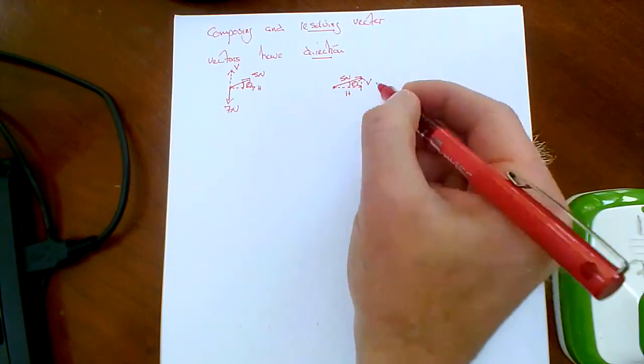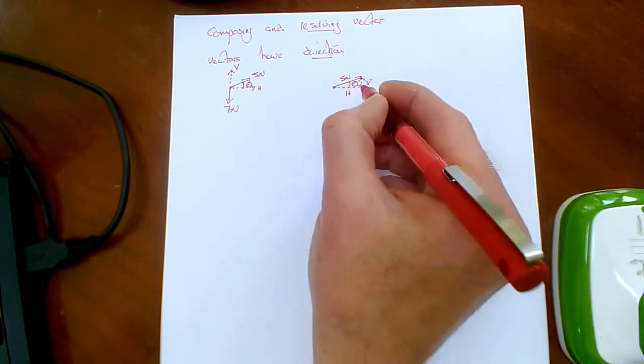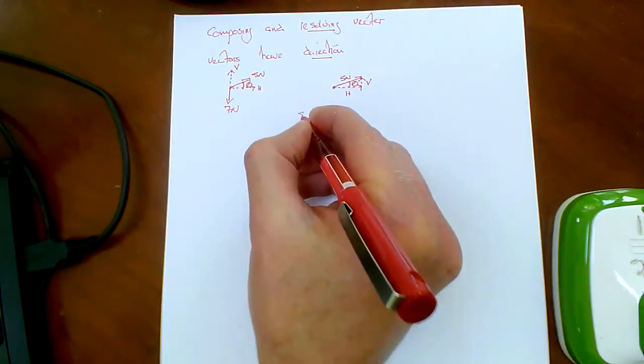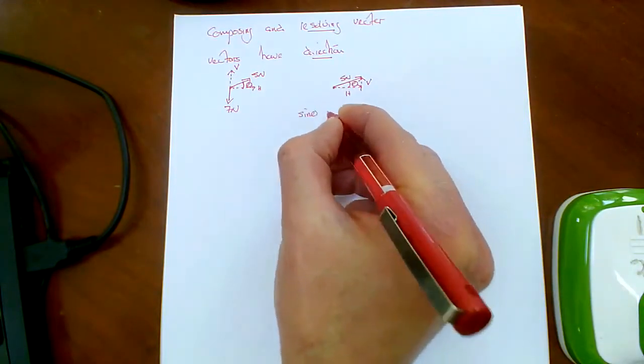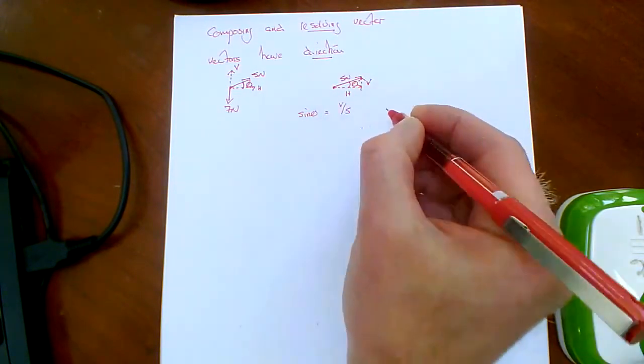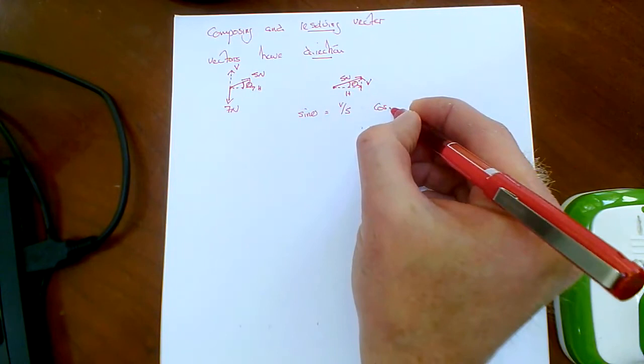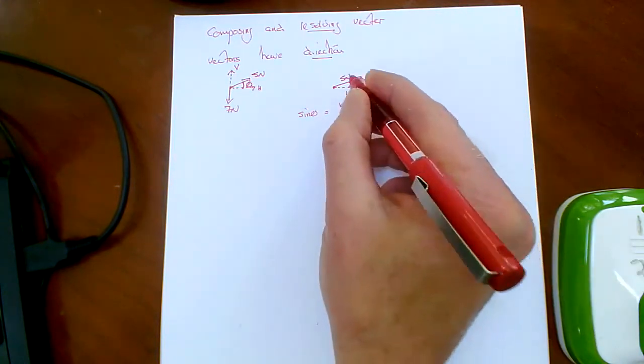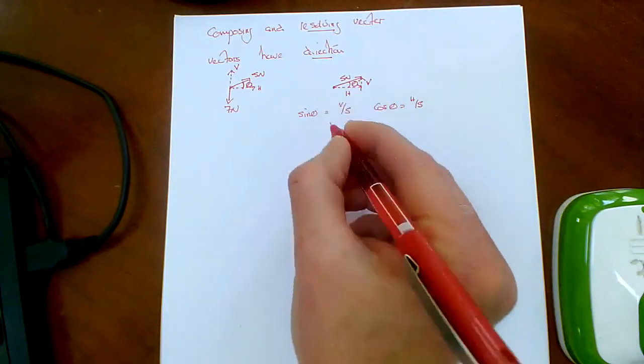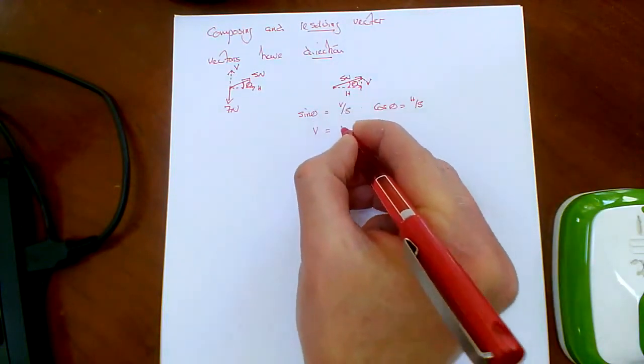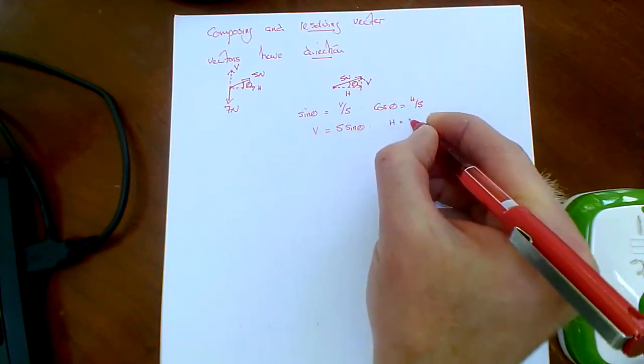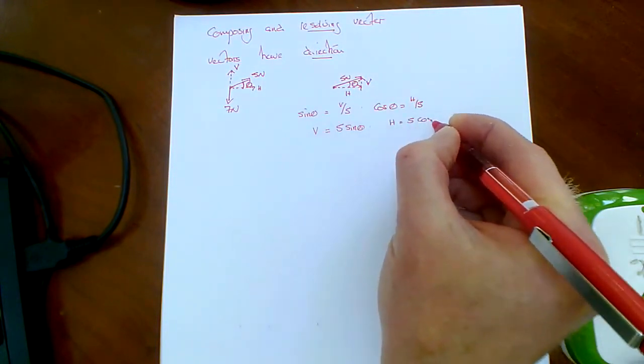There's my 5 Newtons and there's my angle. If we look at our right angle triangle here, we have sine of theta would be this over 5, and cos of theta would be this over 5. And so V would be 5 sine theta and H would be 5 cos theta.